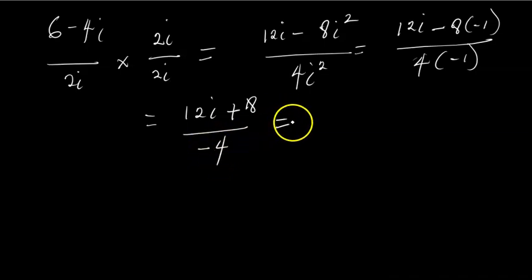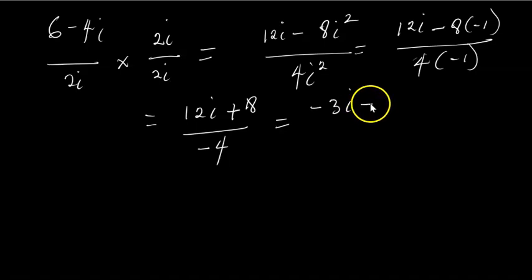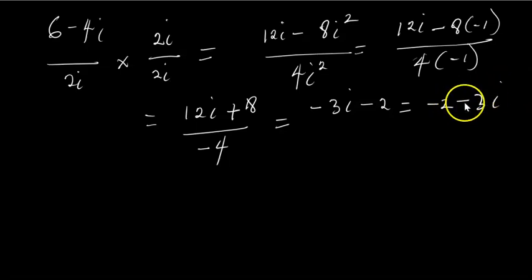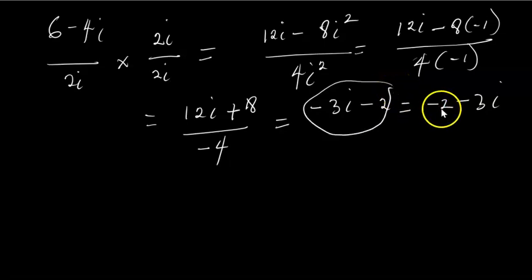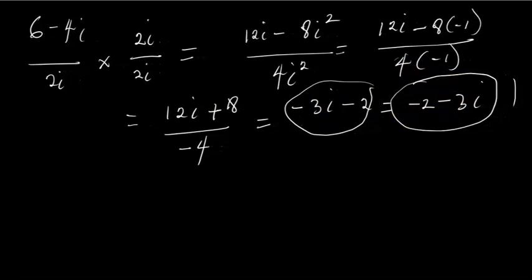I can interpret this to mean 12i, and -8 × (-1) is +8, all over -4. Now solving this: 8 divided by -4 becomes -2, and 12i divided by -4 becomes -3i. So I can write this as -2 - 3i. Whether I write it as -3i - 2 or -2 - 3i, it's the same thing.